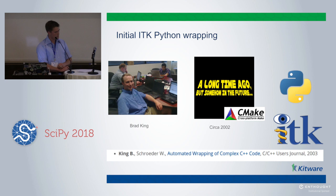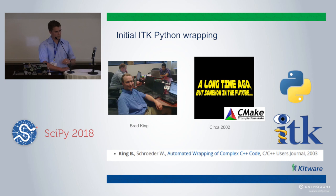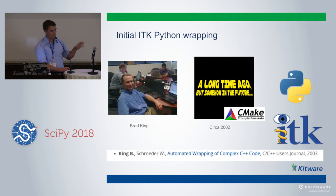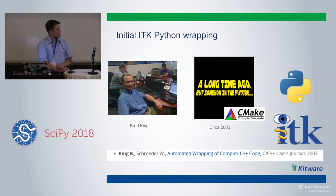It goes back a long time — circa 2002. One of my colleagues who I work with at Kitware, Brad King, his first job was to create the Python wrapping for ITK. This was around the time that CMake — the tool for building C and C++ scientific codes — was developed for ITK, and he's now the maintainer of that. He did a very good job and created the Python wrapping, and was justifiably proud of it.